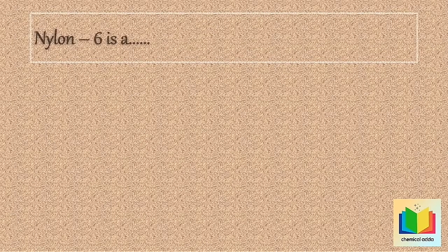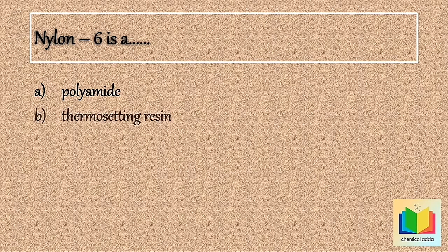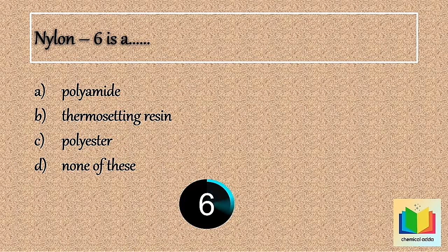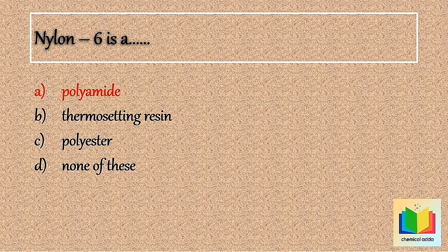Next question: Nylon 6 is a — . Option A: Polyamide. Option B: Thermosetting resin. Option C: Polyester. Option D: None of these. [10 seconds] So the answer is Option A: Polyamide.